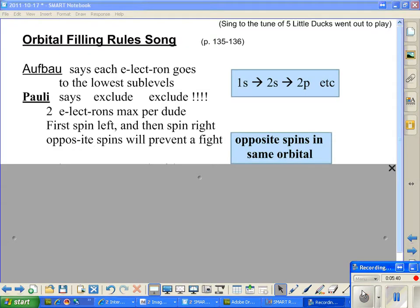So for a quick review, opposite spins in the same orbital are required. And that's what Pauli is all about. Pauli says exclude, exclude, two electrons max per dude. First spin left, and then spin right. But opposite spins will prevent a fight.